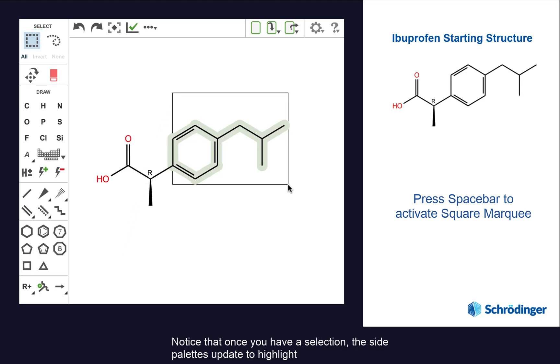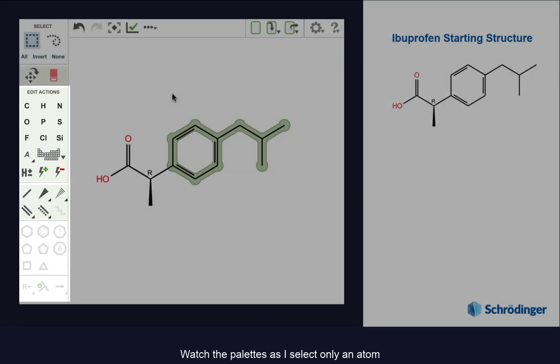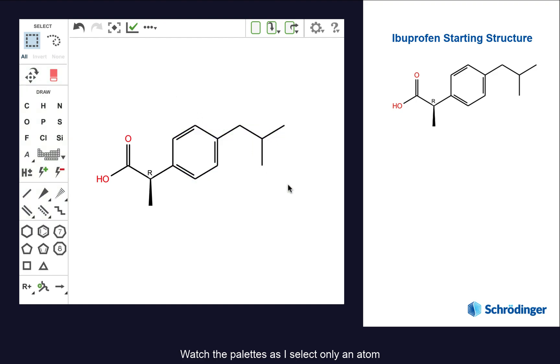Notice that once you have a selection, the side palettes update to highlight only those edit actions that can be used with the current selection. Watch the palettes as I select only an atom or only a bond.